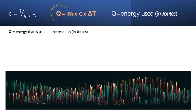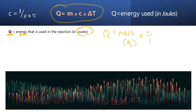Here's that formula: Q is going to be the energy used in the reaction, measured in joules. Q equals mass — and mass is in grams — multiplied by lowercase c, the specific heat capacity, which is some number of joules over one gram times one degree Celsius, and then times delta T, the change in temperature.